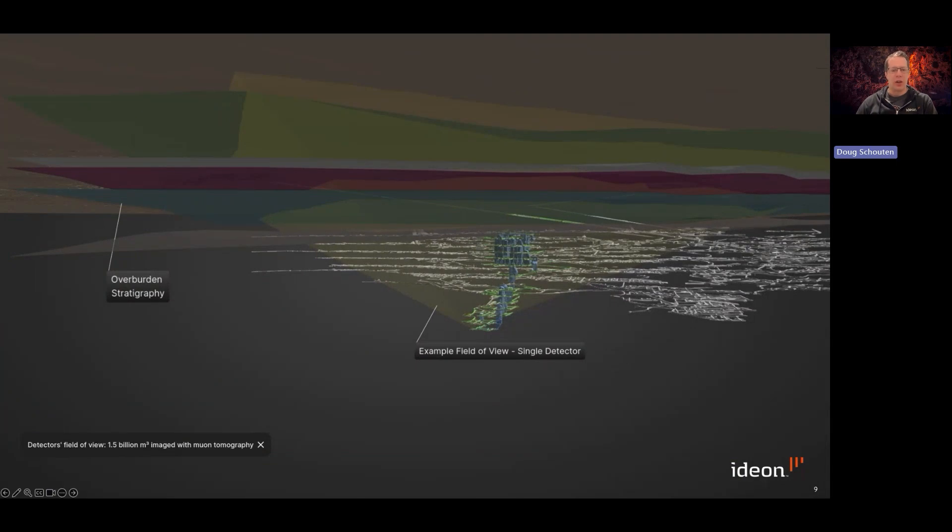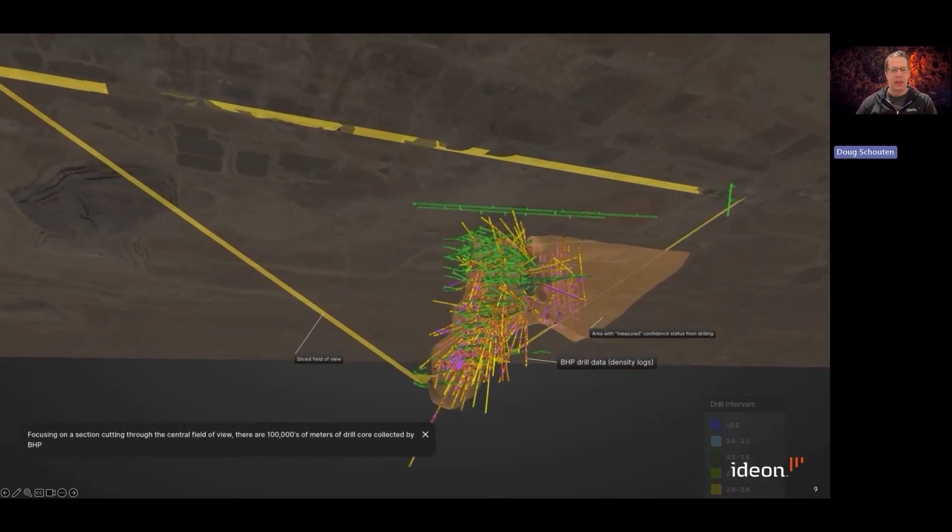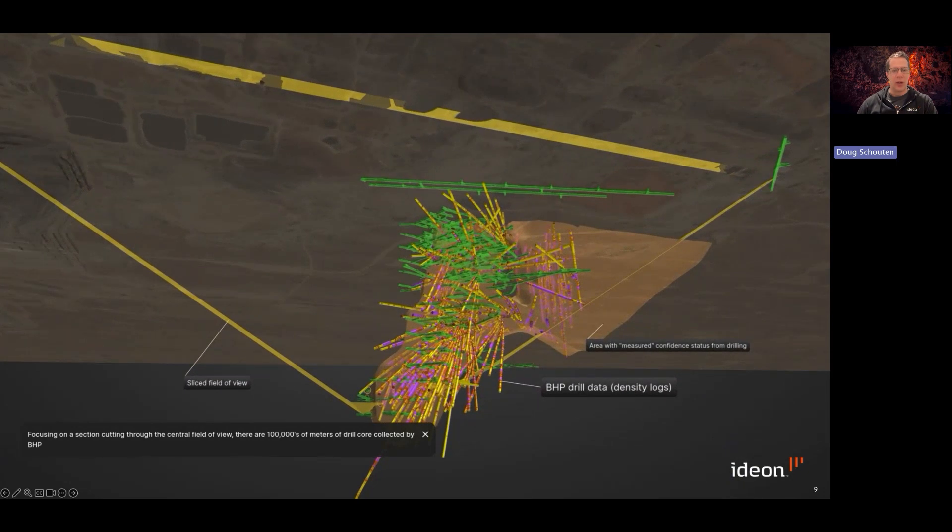Once deployed, the detectors run autonomously and we collect data via a wireless connection once every couple of weeks. The field of view demonstrates the kind of range of data support for each detector, although sensitivity varies throughout that field of view.